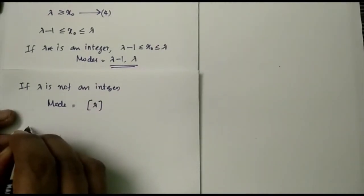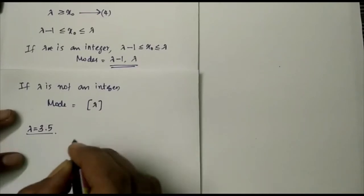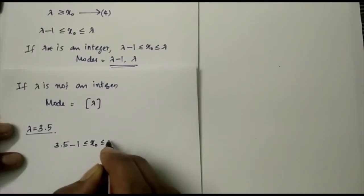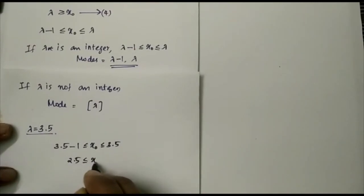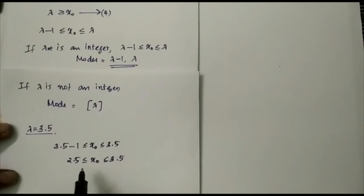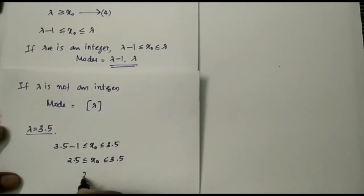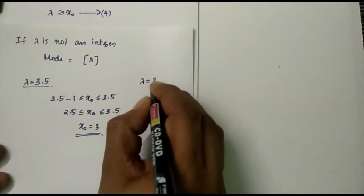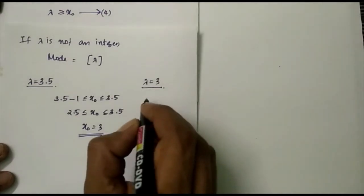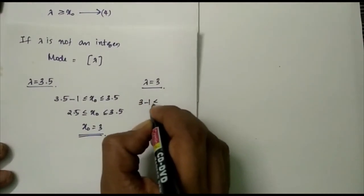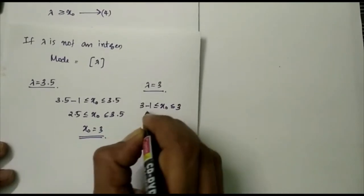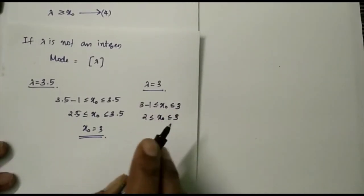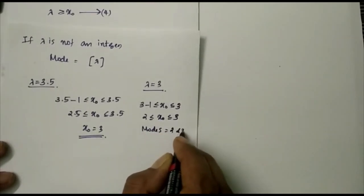For example, if λ = 3.5, then the mode lies between 3.5 − 1 ≤ x0 ≤ 3.5, that is 2.5 ≤ x0 ≤ 3.5. The only integer between 2.5 and 3.5 is 3, so the mode is 3. But if λ is the integer 3, the mode lies between 2 ≤ x0 ≤ 3, and both 2 and 3 are integers, so the modes are 2 and 3 — the distribution is bimodal.